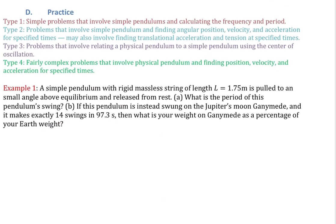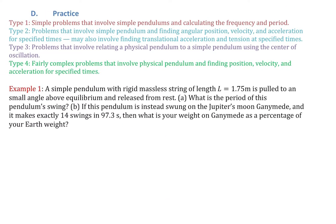There are four types of practice problems: Type 1 — simple pendulums, calculating frequency and period. Type 2 — simple pendulums, finding angular position, velocity, and acceleration at specified times, possibly also finding translational acceleration and tension. Type 3 — relating a physical pendulum to a simple pendulum using the center of oscillation. Type 4 — physical pendulums, finding position, velocity, and acceleration at specified times.